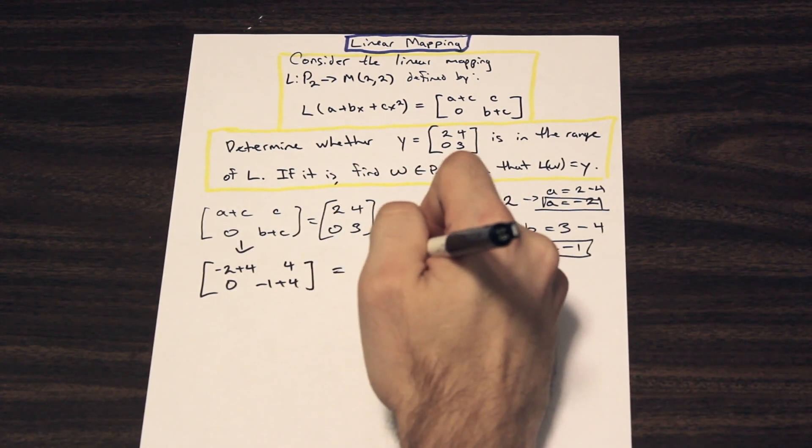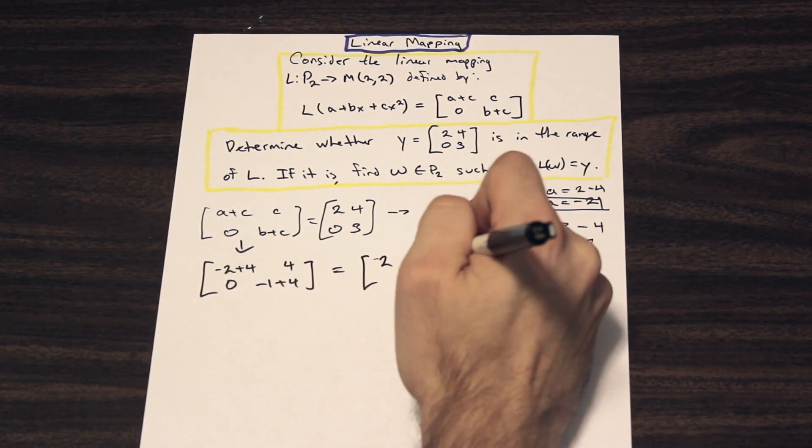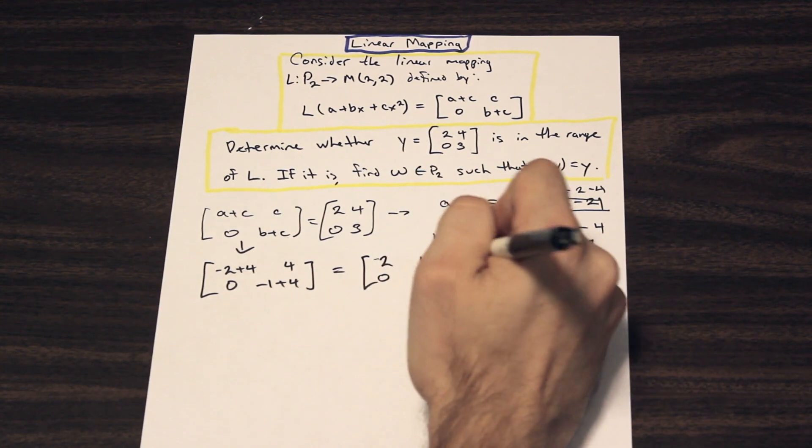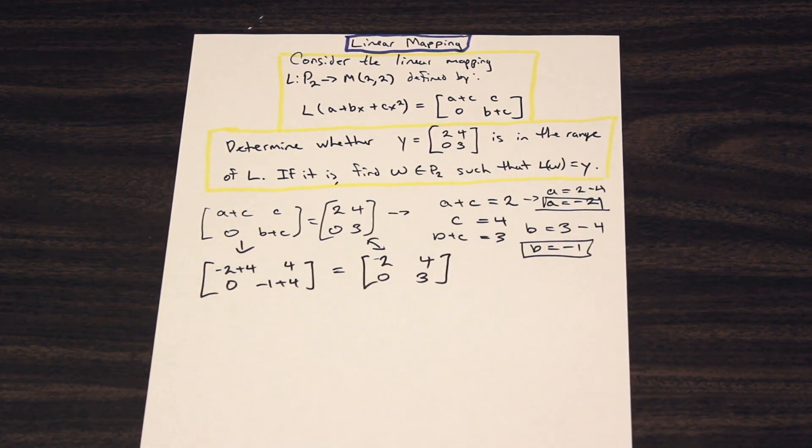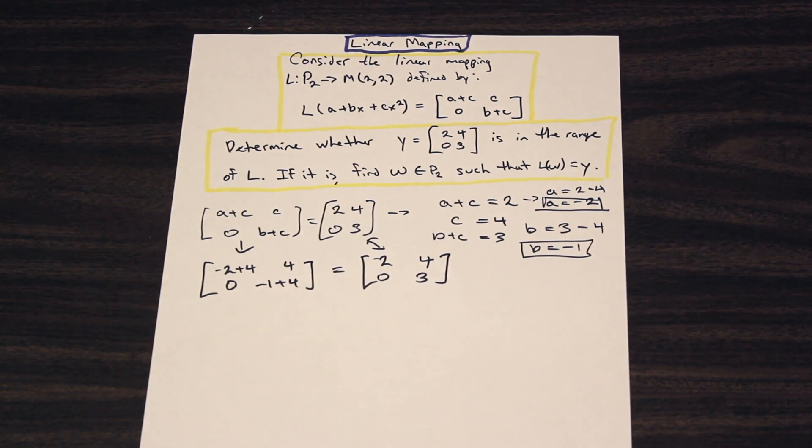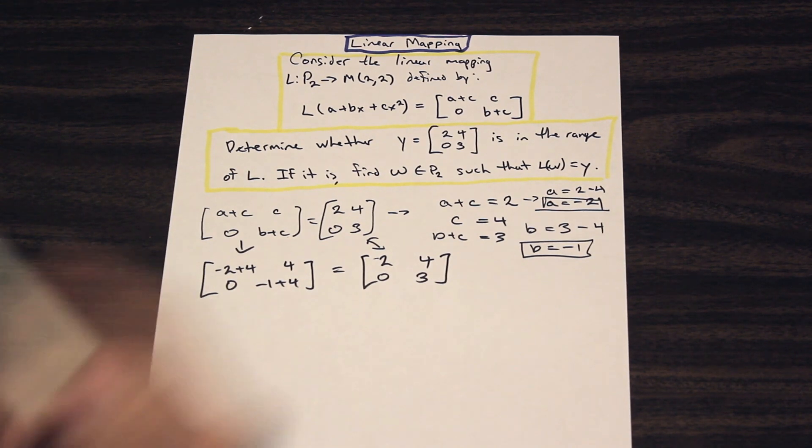And that will give us a matrix of 2, 4, 0, and 3. And as you can see, these matrices are the same, which means that the system is consistent. So the system is consistent, therefore, we can conclude that Y belongs to the range of L.